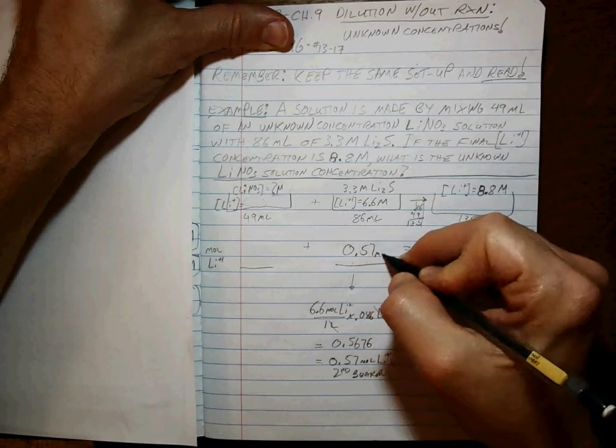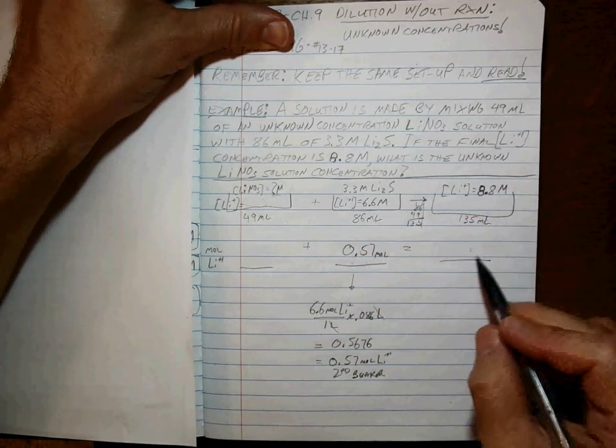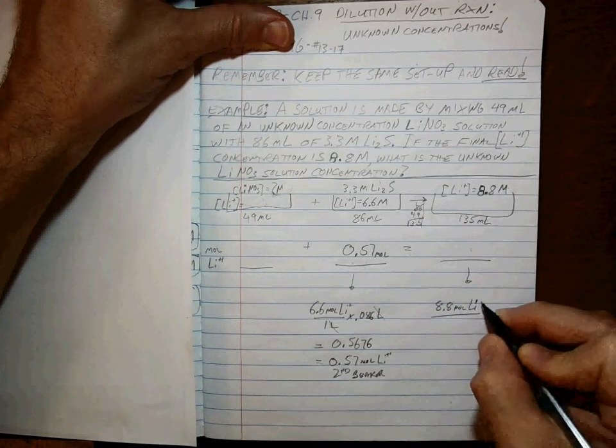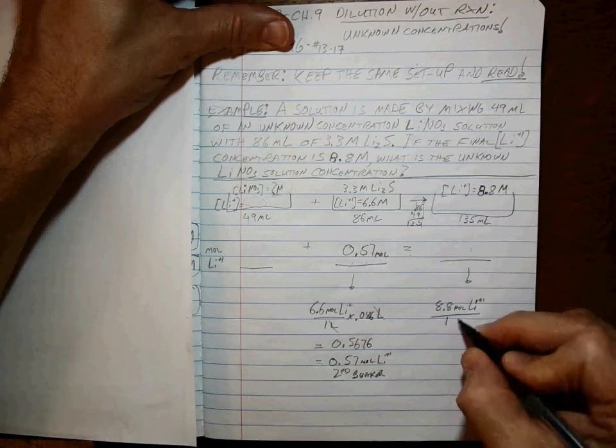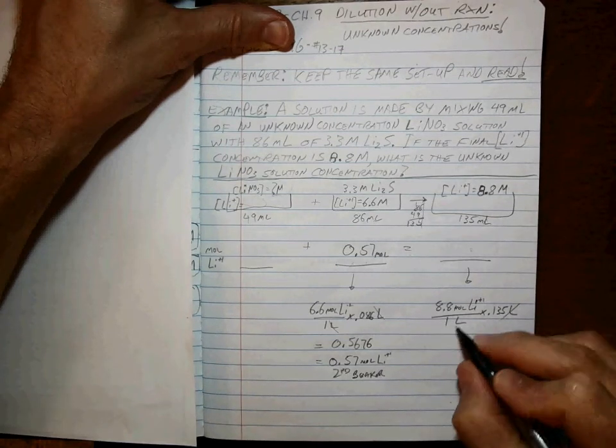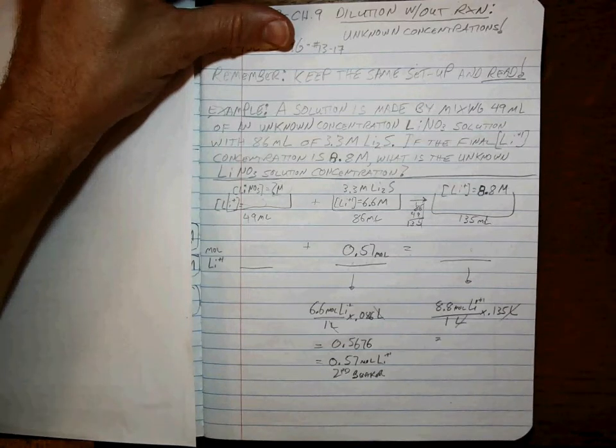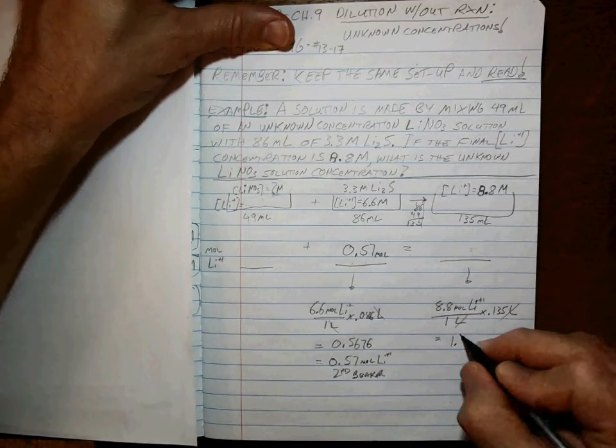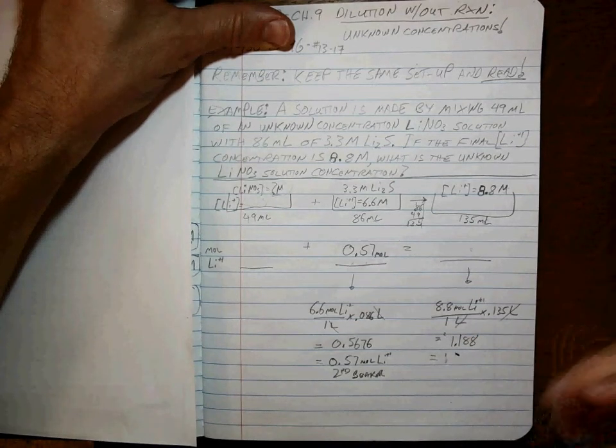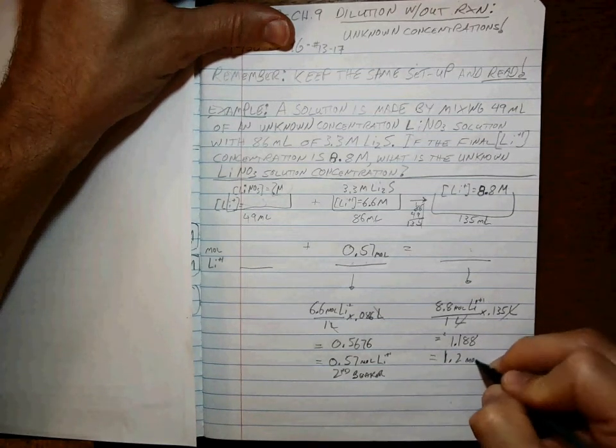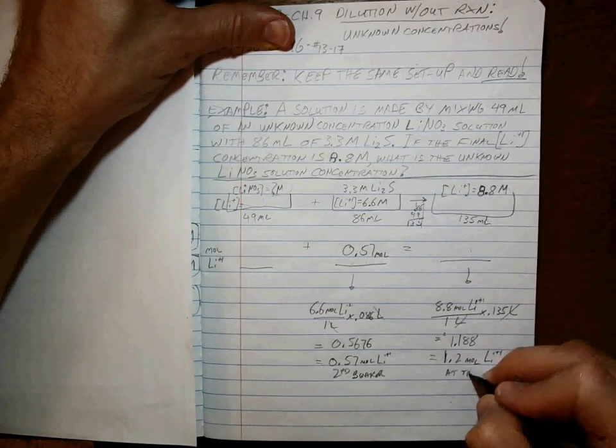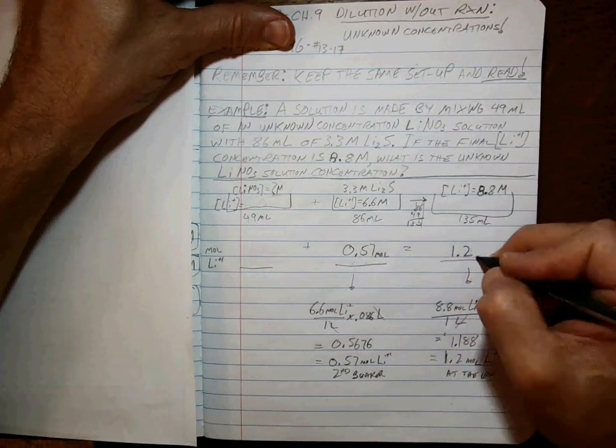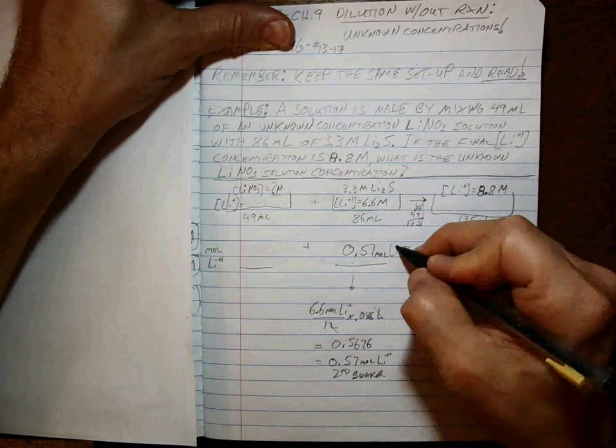So, 0.57 moles of lithium ion come from that second beaker. How many moles of lithium ion do we have at the end? Well, if we know there's 8.8 moles of lithium ion at the end per one liter, but we don't have one liter, we have 0.135 liters. Liters cancel. This will give us 8.8 times 0.135 equals 1.188. And again, to 2 sig figs, we're talking about 1.2 moles of lithium ion at the end.